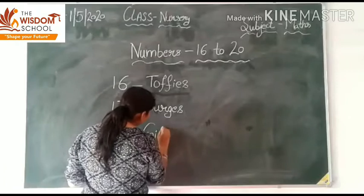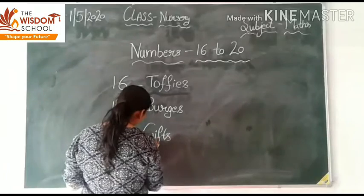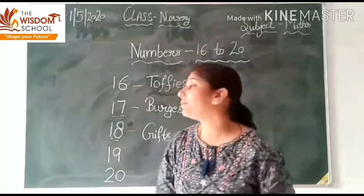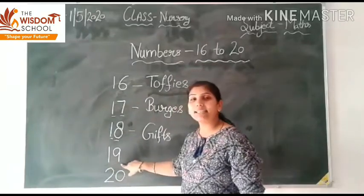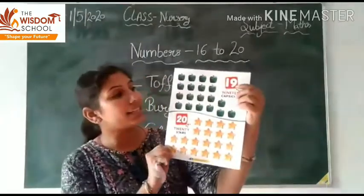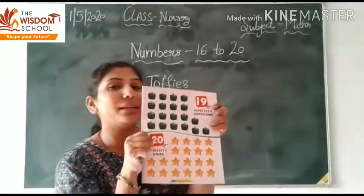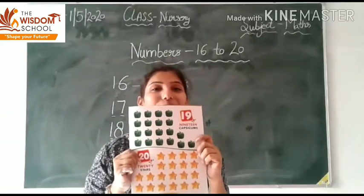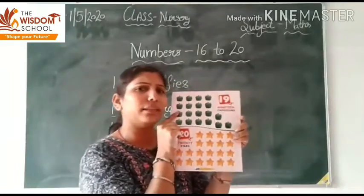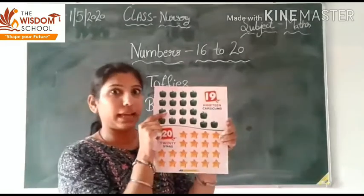18 gifts. Okay, the next one is 19. 1 9 — 19. Here is 19. यह dream क्या है? Vegetable — हमने vegetables के names learn किये थे ना? हाँ, right — green color के Capsicum. आप खाते हो Capsicum?